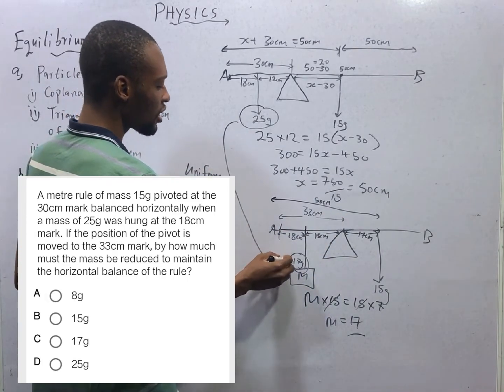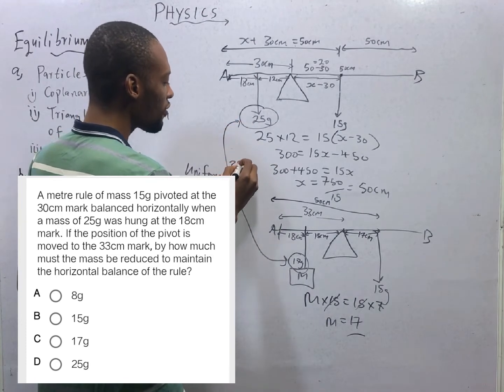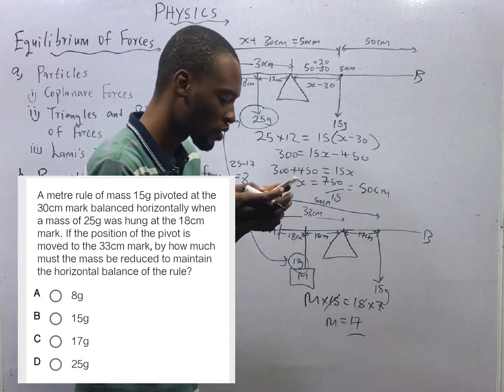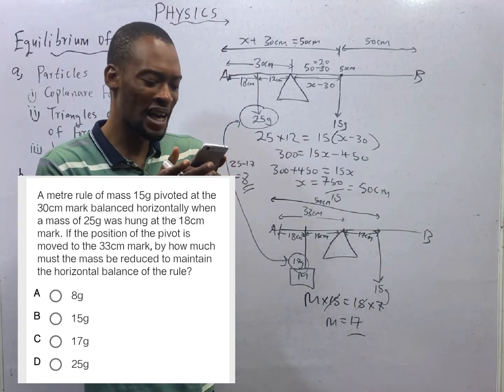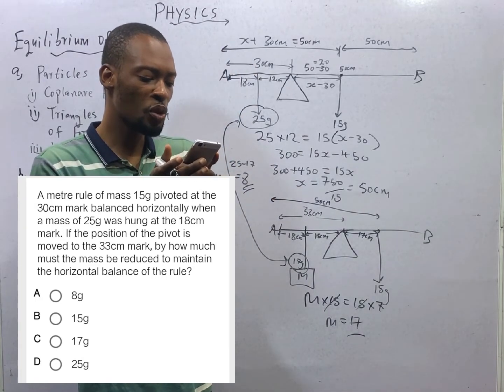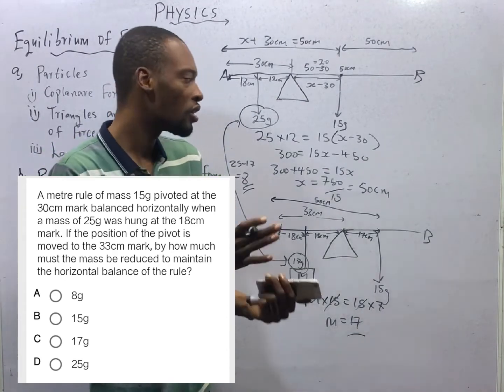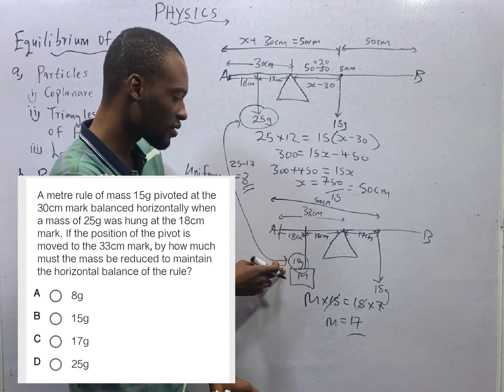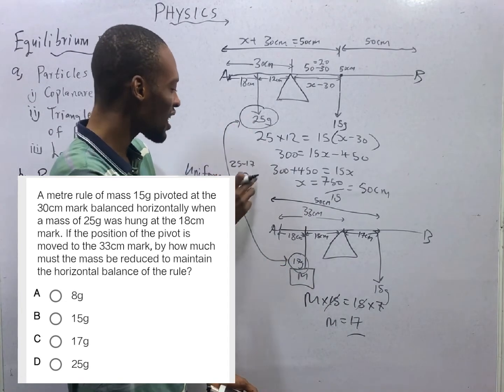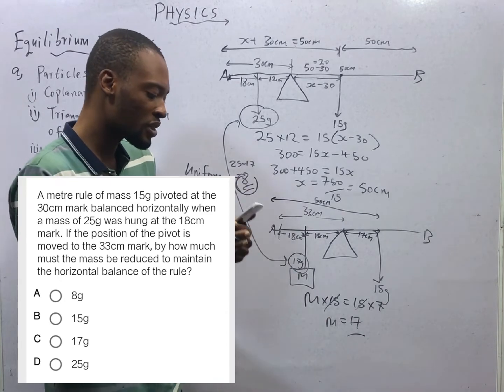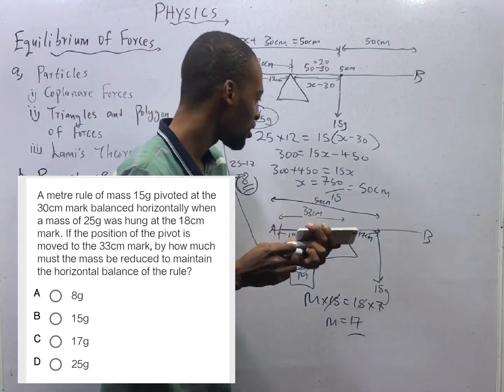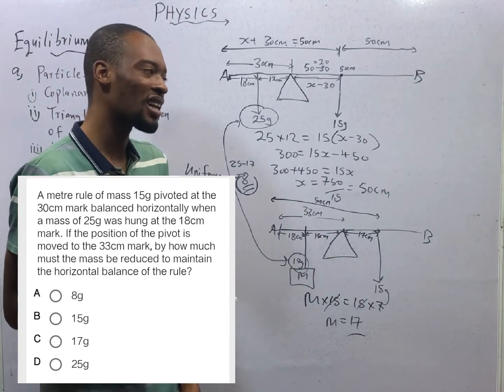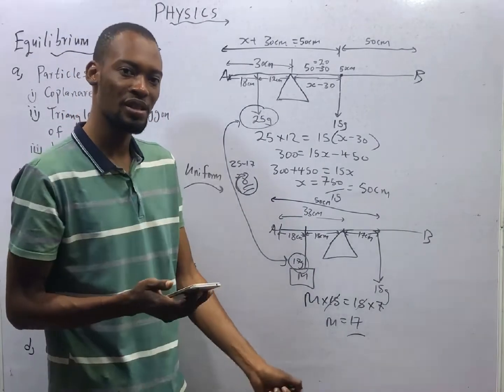So from here, M times 15 equals 15 times 17. M equals 17 since 15 cancels 15. So the mass here is 17 grams and the mass here is 25 grams. 25 minus 17 is 8. The question asks how much must the mass be reduced to maintain the horizontal balance. The mass was 25 and after adjustment we needed 17 grams, which means the mass has been reduced by 8 grams. Option A is the correct option.